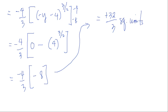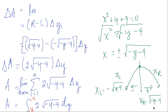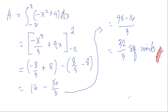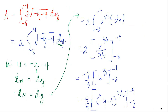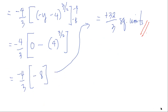We got the same answer using both methods: 32 over 3 square units using vertical strips and 32 over 3 square units using horizontal strips. Both methods confirm the area of the region bounded by the two curves.